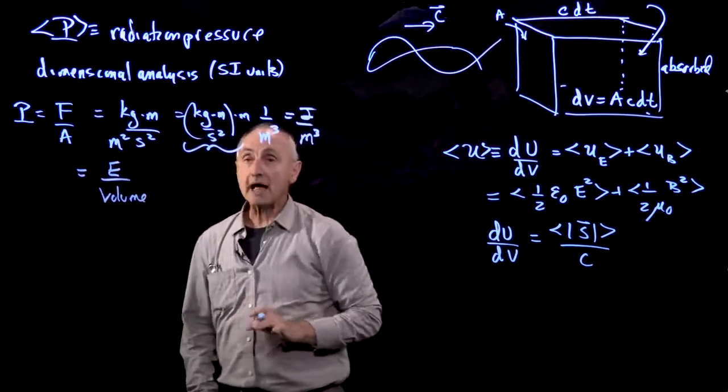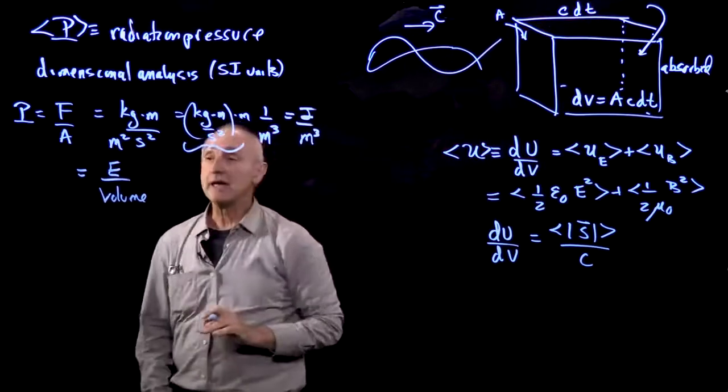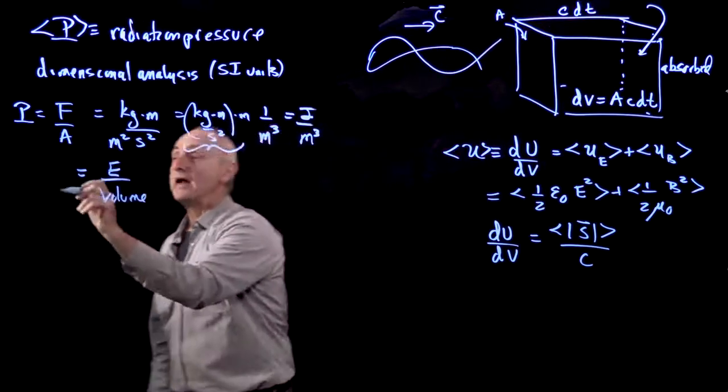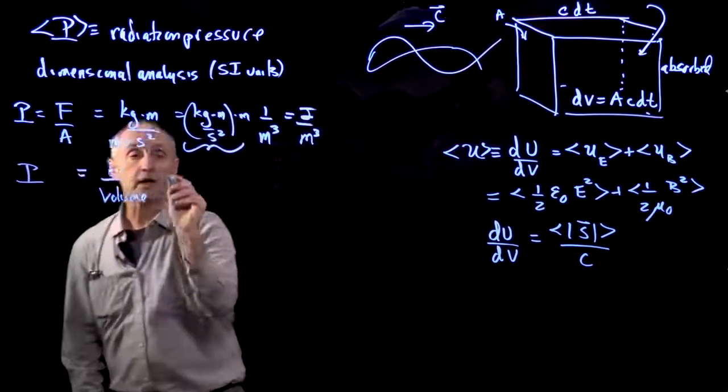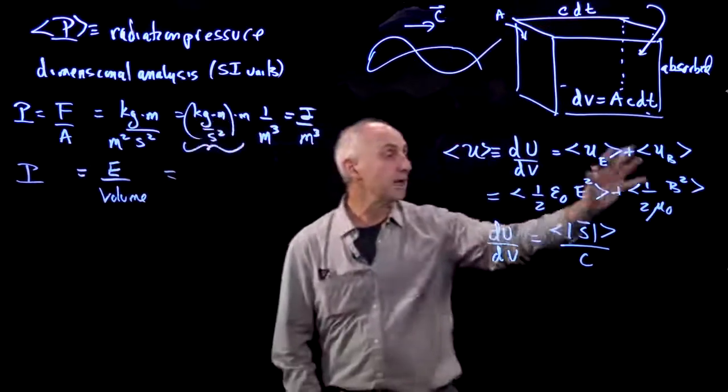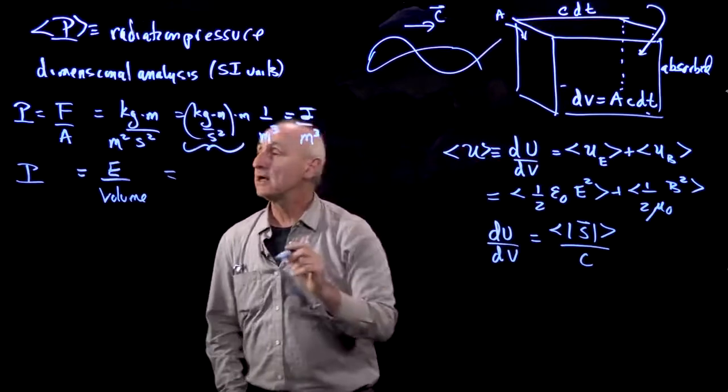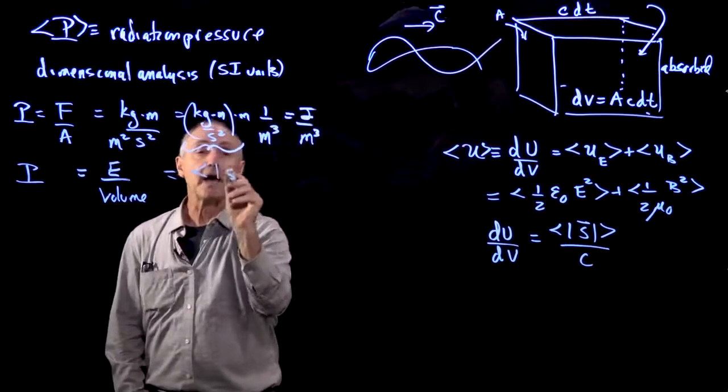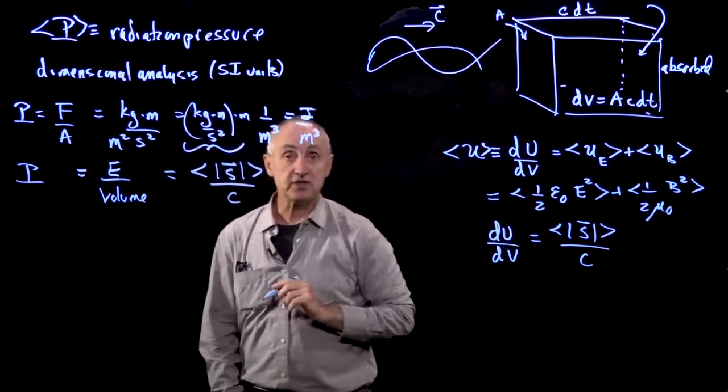And so from a dimensional analysis, we could say that the radiation pressure is energy per volume, and energy per volume is just given by the magnitude of the Poynting vector divided by c.